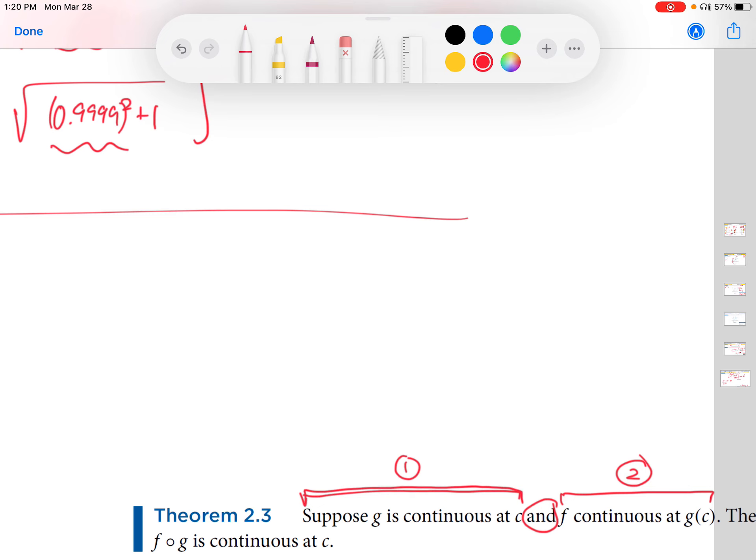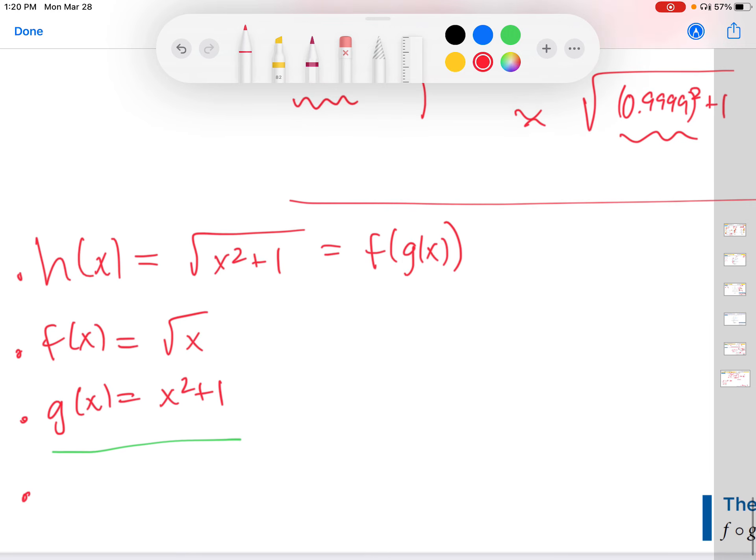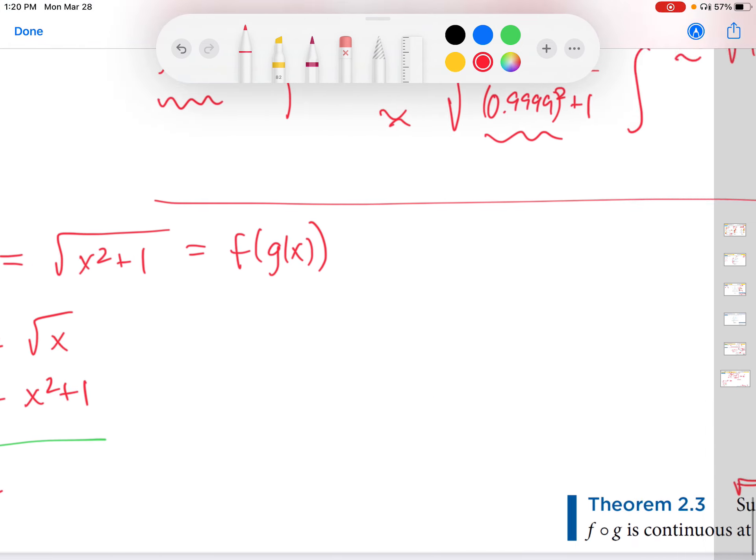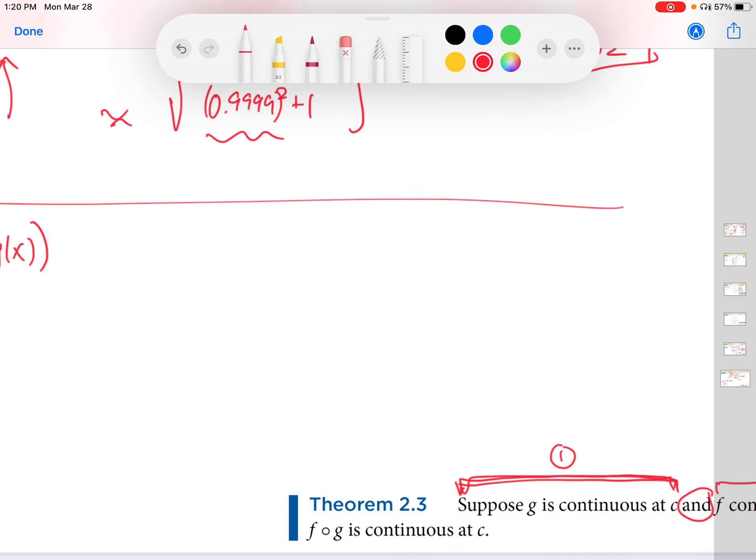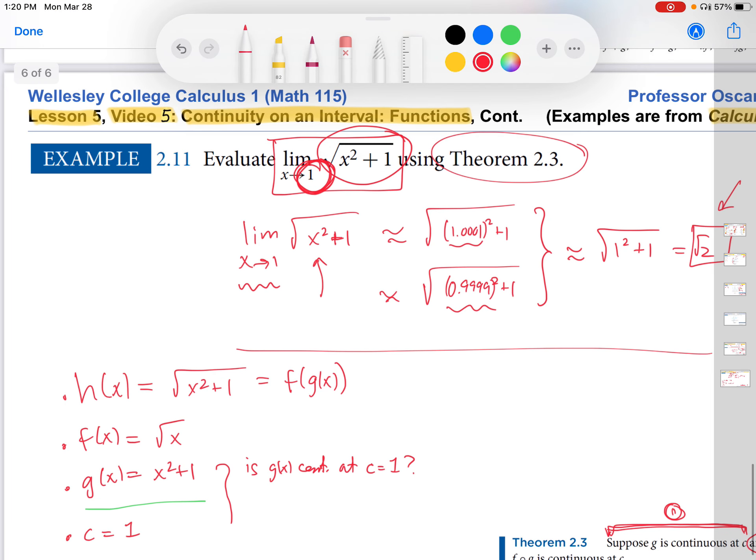So the first one, suppose g is continuous at c. In our problem, this is g. And I'll just write over here, c equals 1. c is the x value we are approaching in the limit. So back to checking the hypotheses. Suppose that g is continuous at c. That first thing to check in our problem is translating to: is g of x continuous at c equals 1? So how do we figure that out? Well, we kind of go back to the previous video. In video 5.4, we talked about a couple of theorems that we were able to lean on to determine continuity if we knew the domain and the specific function family.